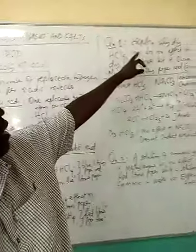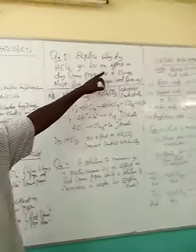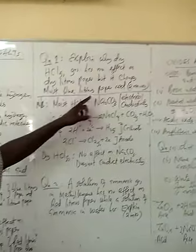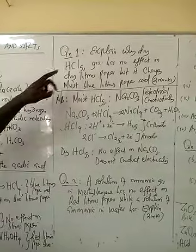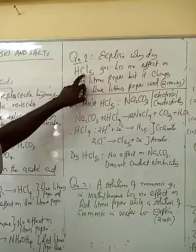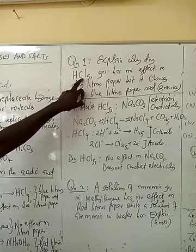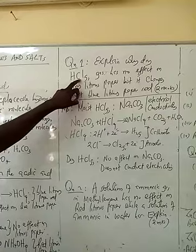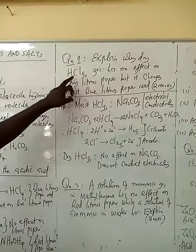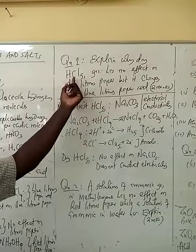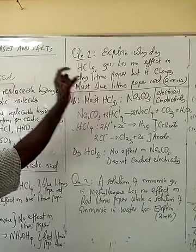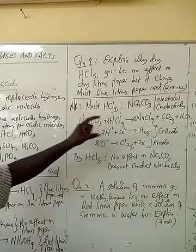Explain why dry hydrogen chloride gas has got no effect on red litmus paper, but it changes moist red litmus paper. The reason is that dry hydrogen chloride gas is in molecular form — it does not have any mobile hydrogen ions which will make it have acidic properties. But in water, it will form hydrochloric acid, which will eventually have hydrogen ions. And hydrogen ions are the ions which will make the compound have acidic properties.